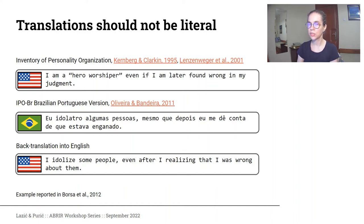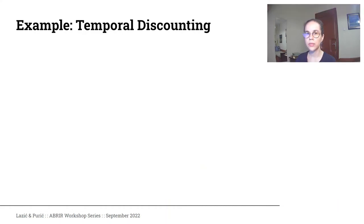To illustrate why context and idioms are important: there is an item from an inventory of personality organization that says 'I'm a hero worshiper even if I am later found wrong in my judgment.' Researchers translating this into Brazilian Portuguese changed it to 'I idolize some people,' because the term 'hero worshiper' has no clear meaning in Brazilian Portuguese and in other languages. Because they adapted the item this way, it is more likely to be adequately understood by Portuguese language participants in Brazil. The items do not need to remain literally identical — it is much more important for items to retain the same meaning and conceptual equivalence.